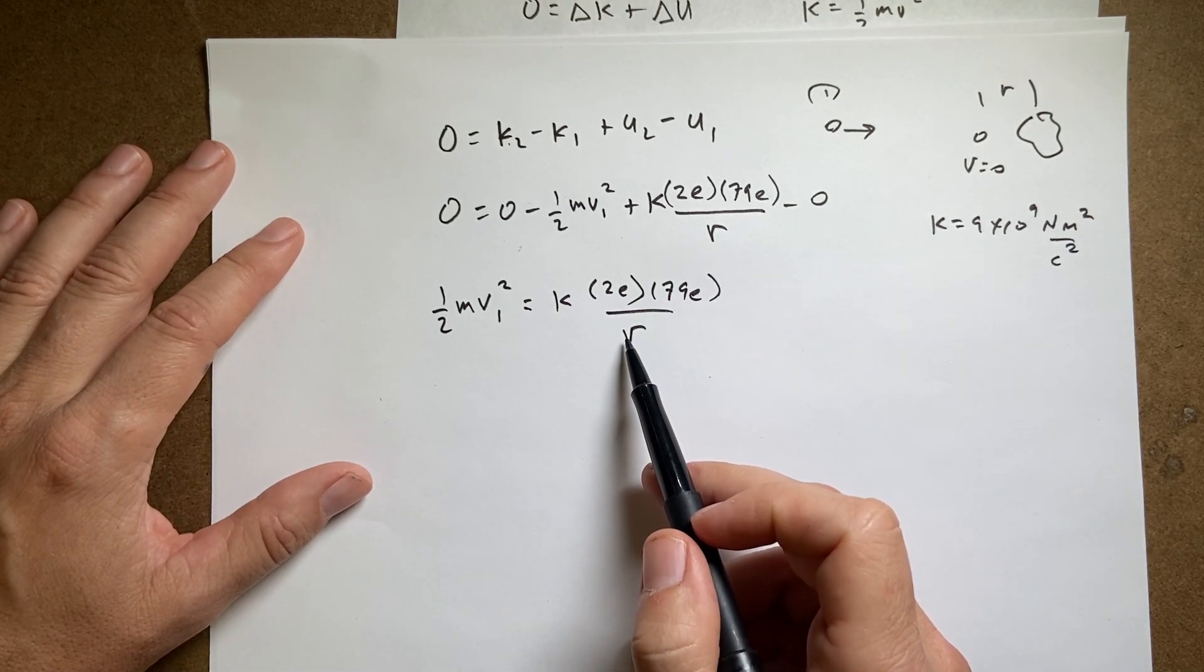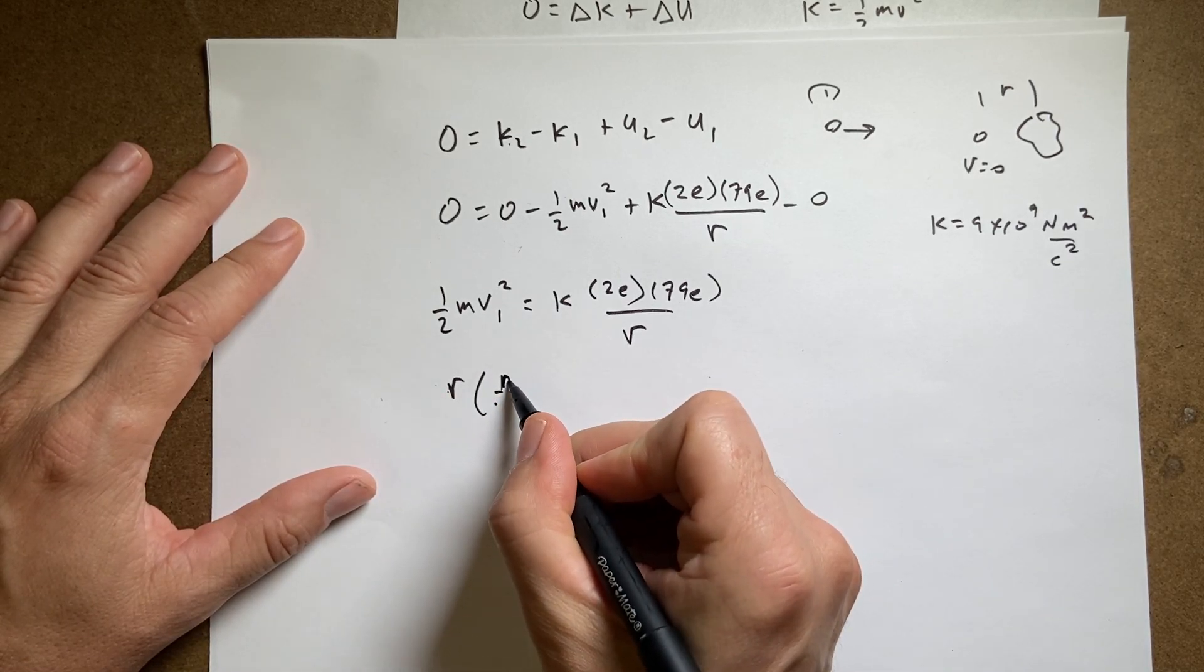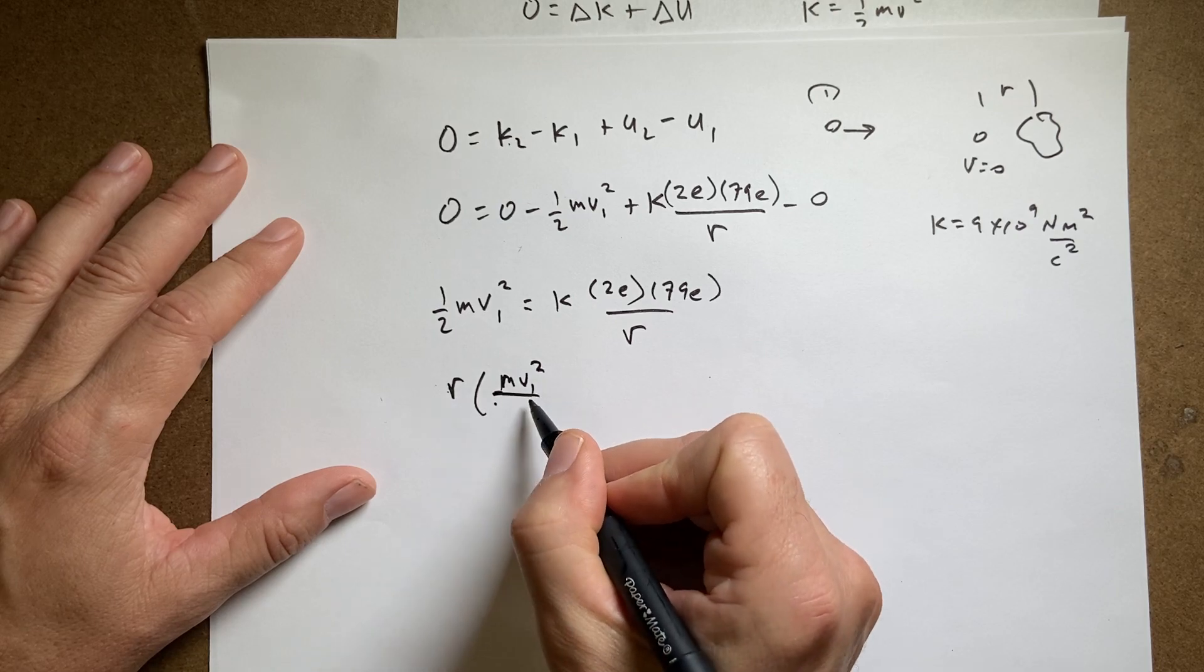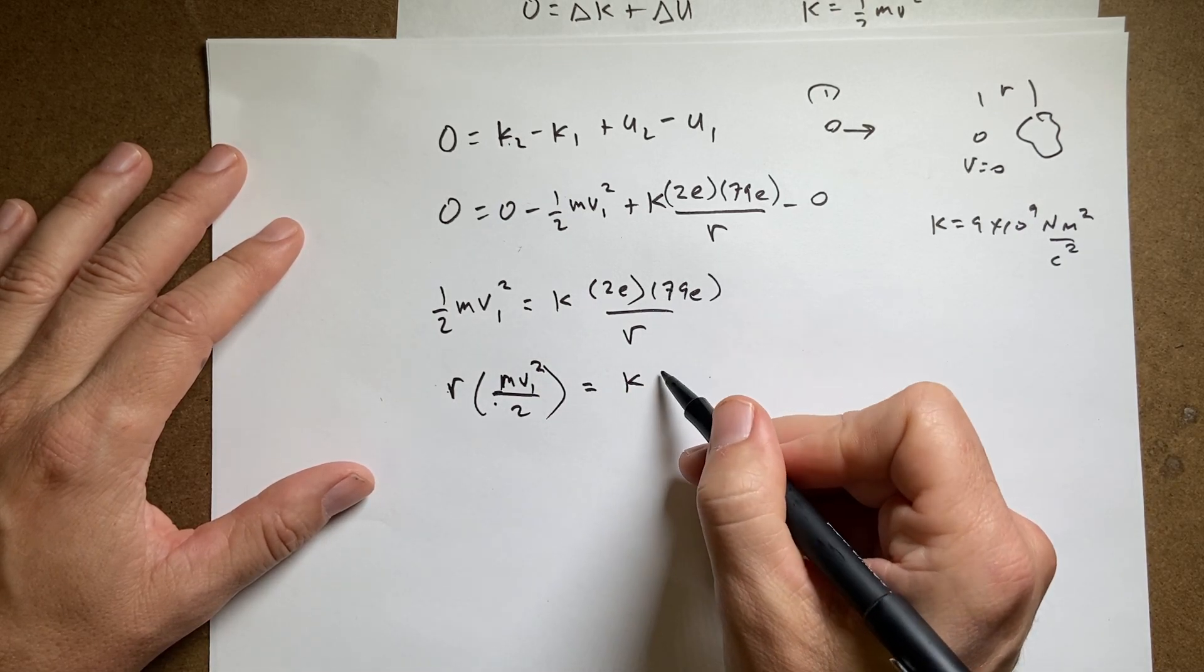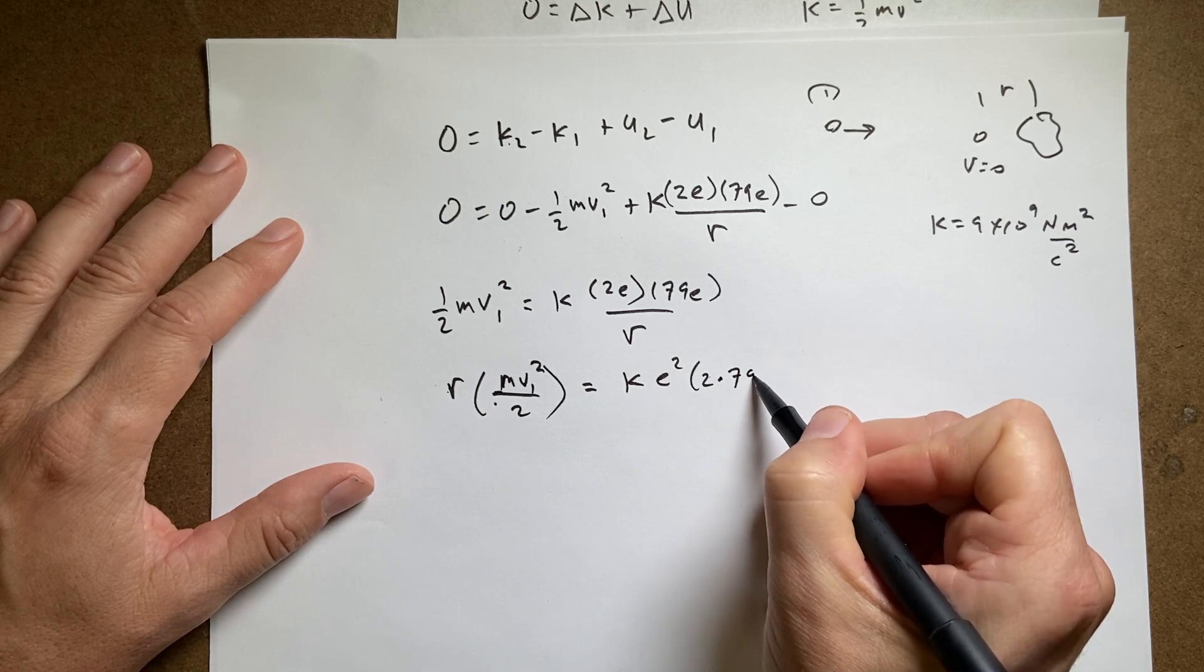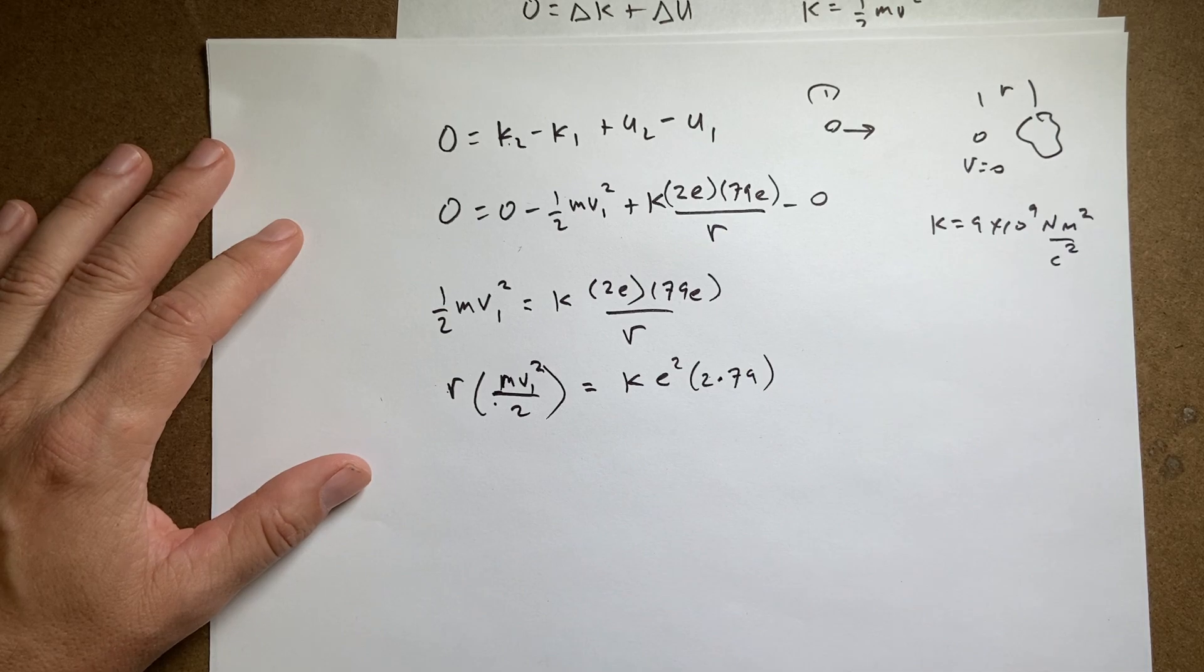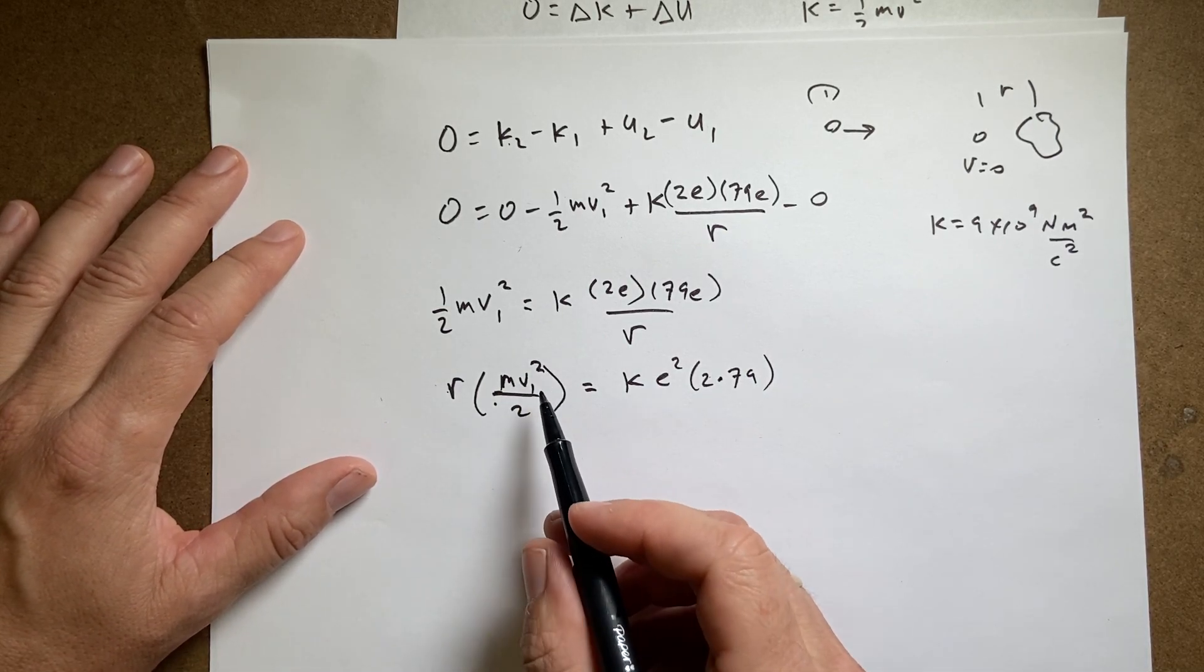So I'm going to multiply both sides by r. I get r times one half mv1 squared equals k times e squared times 2 times 79. Let's put those two together. Now I'm going to multiply by 2 and divide by mv squared.